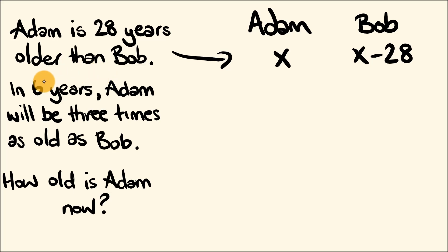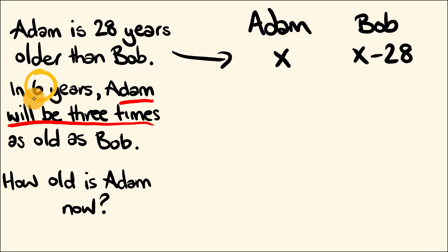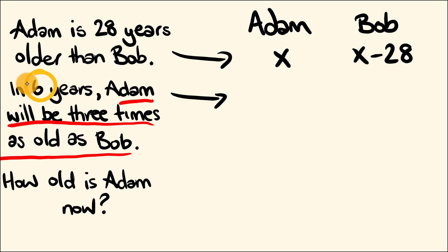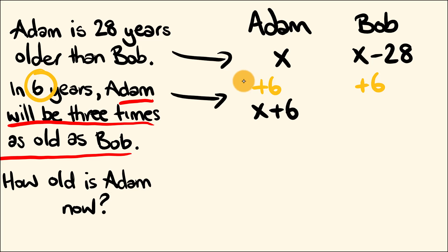Now let's look at the second sentence: in six years, Adam will be three times as old as Bob. There are two pieces of information — first, in six years time, and second, Adam will be three times as old as Bob. So how old will they be in six years? They'll have six years added to both of them: plus six, plus six. Adam will be x plus six years old, and Bob will become x minus 22 — since six more than minus 28 is minus 22.